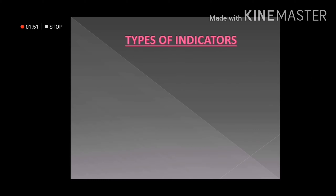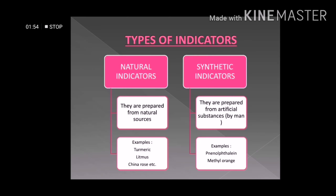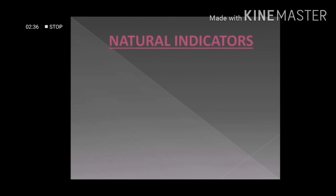Let us discuss the types of indicators. We broadly classify indicators into two groups: natural indicators and synthetic indicators. Natural indicators are prepared from natural sources. Synthetic indicators are prepared in factories using artificial substances. Some examples of synthetic indicators are phenolphthalein and methyl orange.